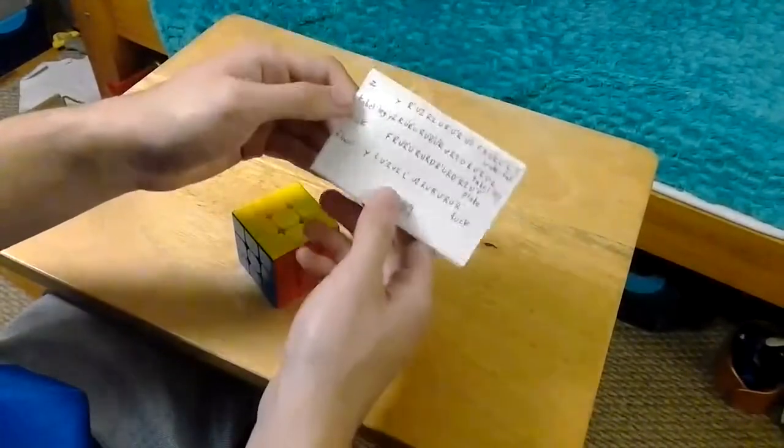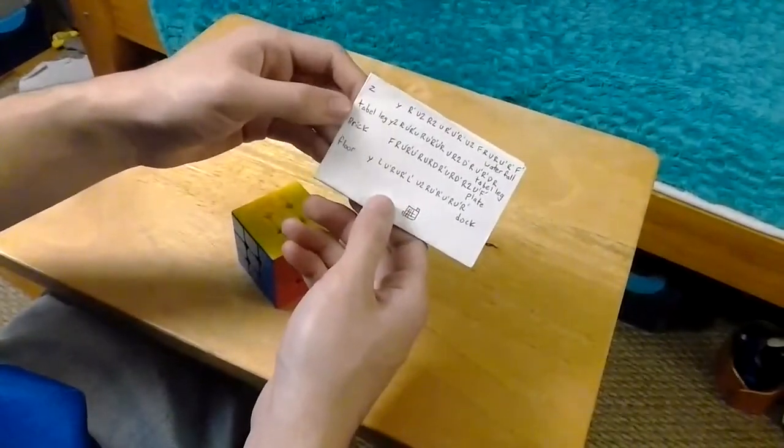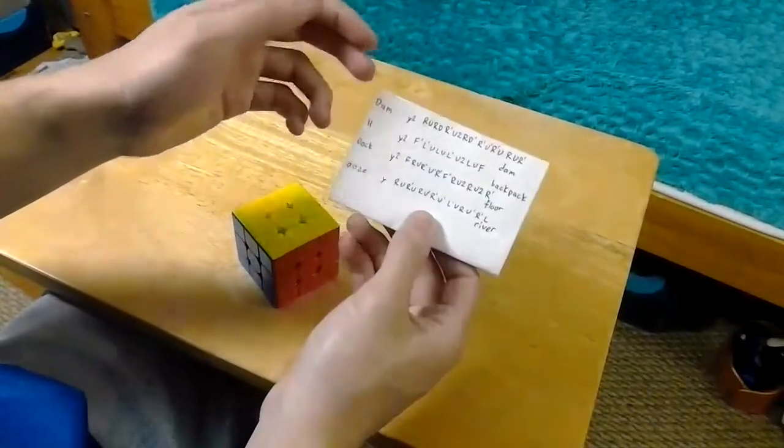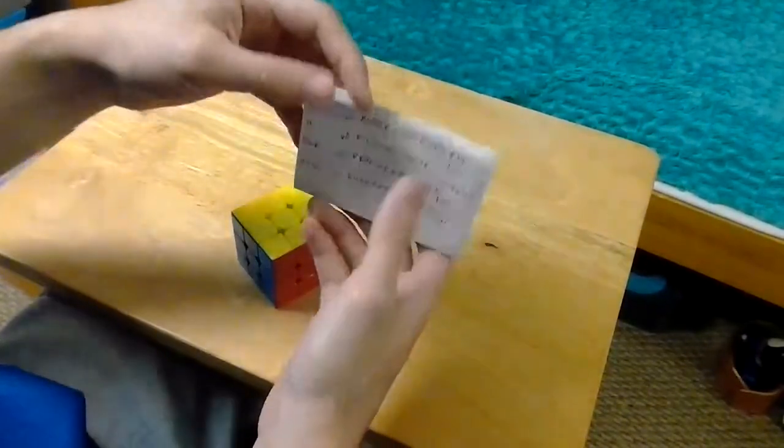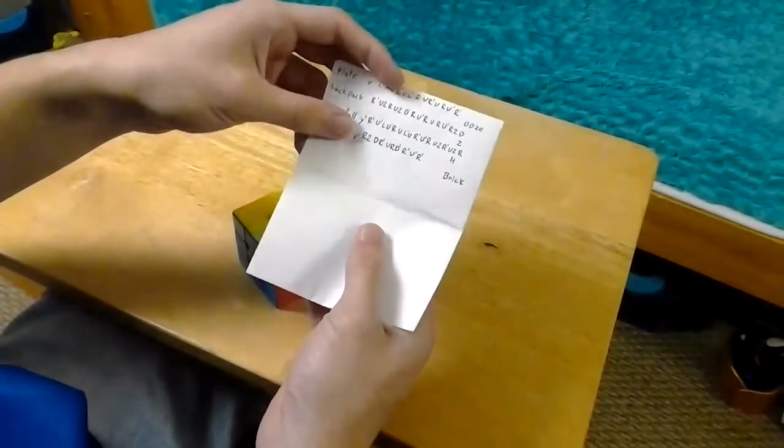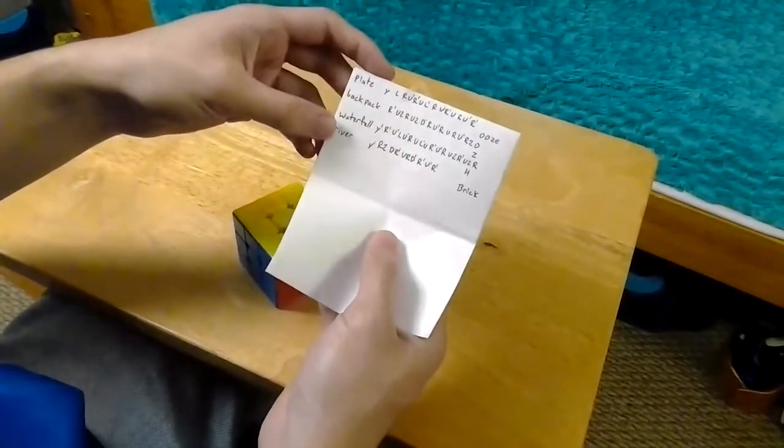This side has UA perms with no AUF, U, U2, and U prime. This side has UB perms and all the same AUFs, and this side has two Z perms, H perm, and skip.